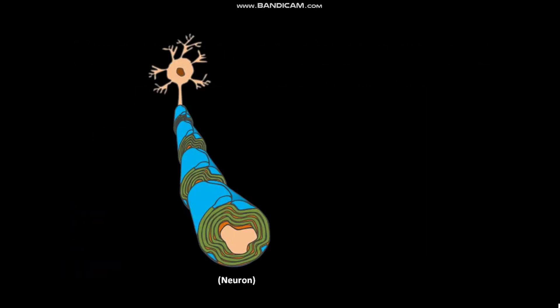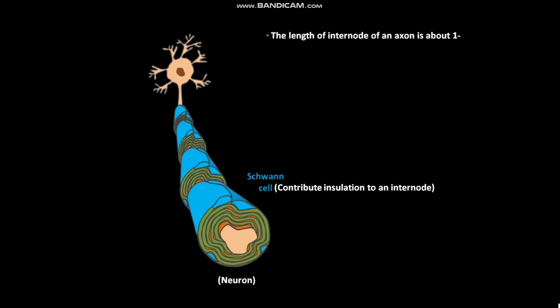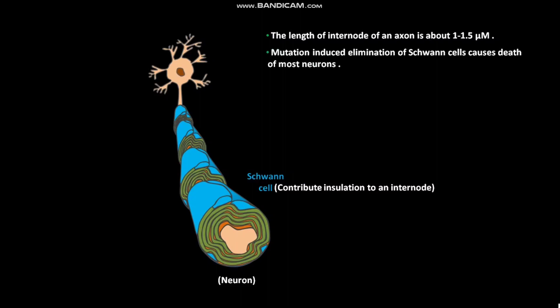This is a neuron present in the peripheral nervous system. Schwann cells contribute insulation to an internode. The length of an internode of an axon is about 1 to 1.5 micrometers. Mutation-induced elimination of Schwann cells causes death of most neurons.